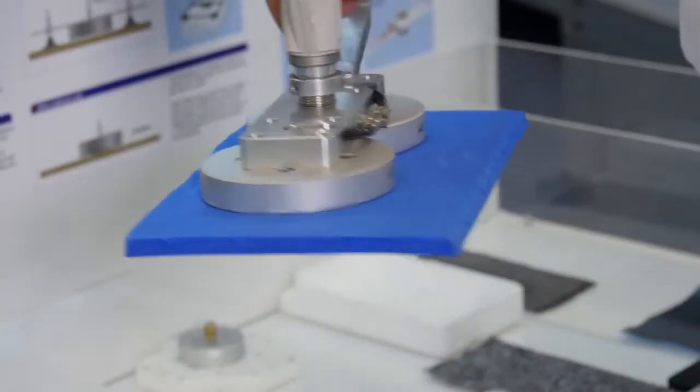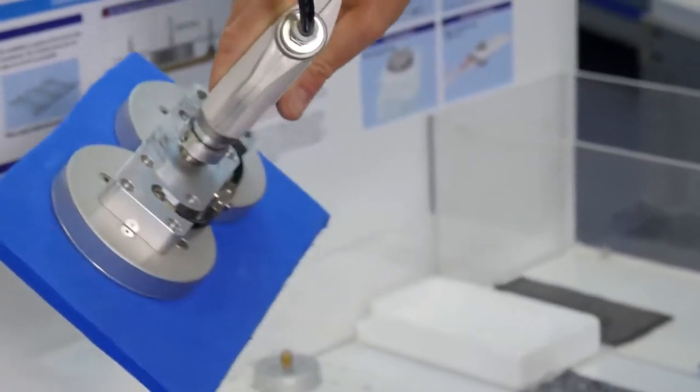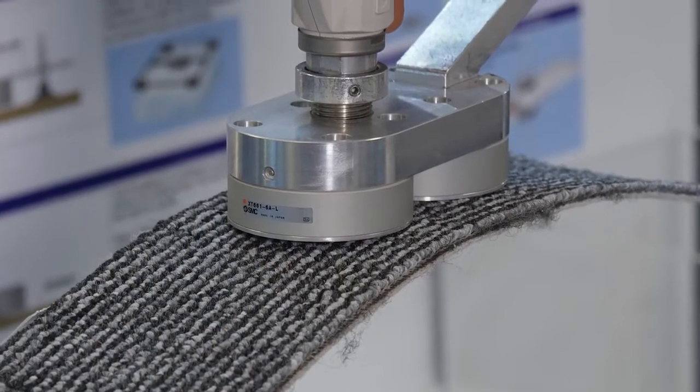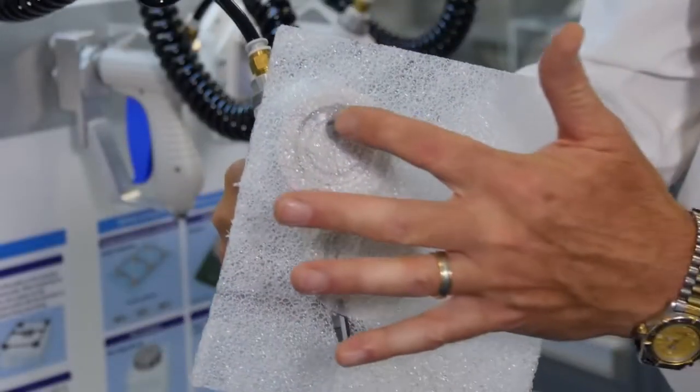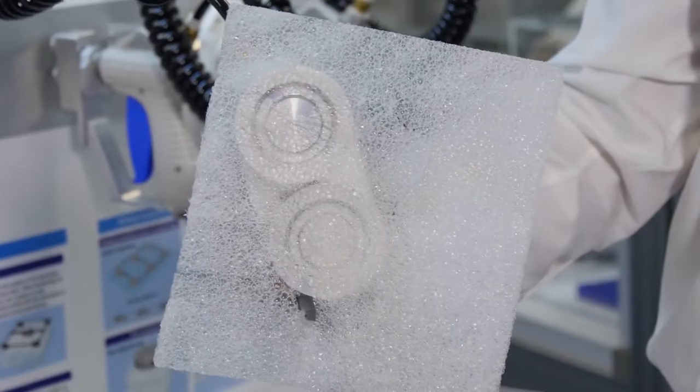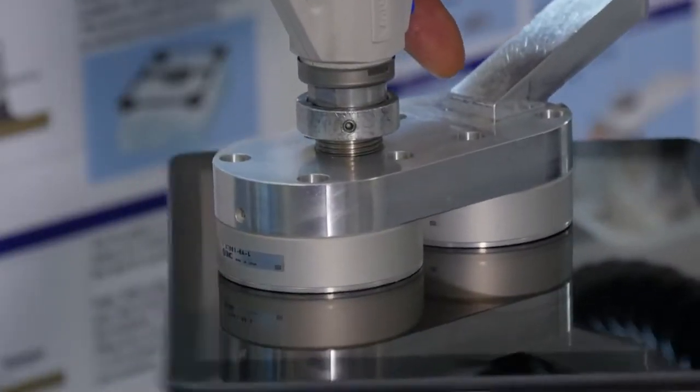You may want to use a non-contact gripper if the product you're looking to pick up is particularly porous or has lots of holes in or has an irregular surface, or you may not actually want to touch the surface of the product you're picking up.